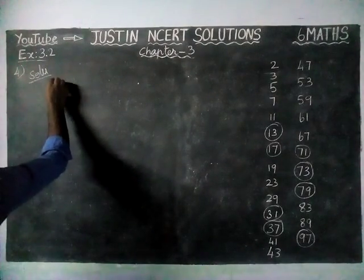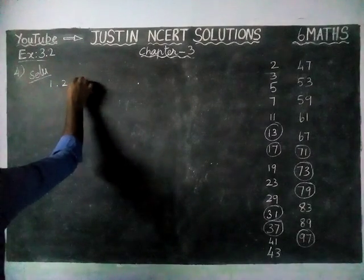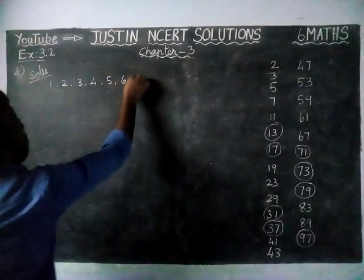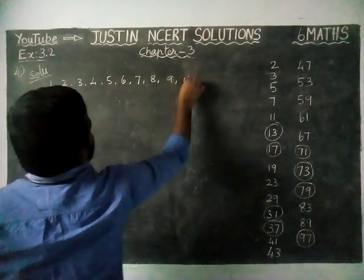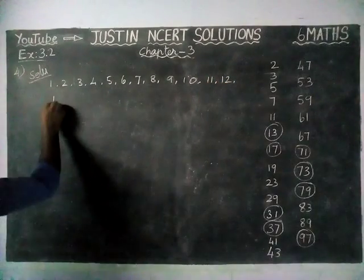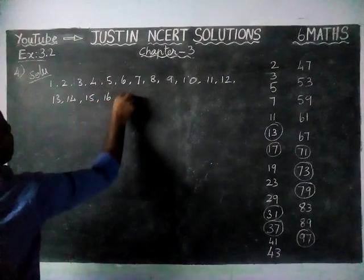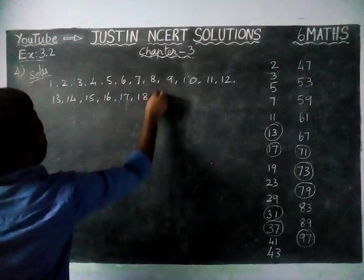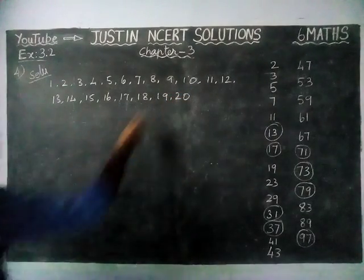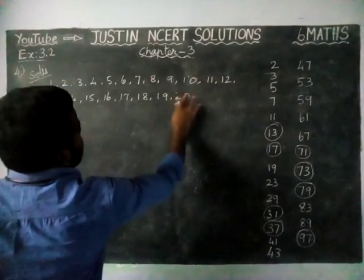So, we will write all the numbers from 1 to 20: 1, 2, 3, 4, 5, 6, 7, 8, 9, 10, 11, 12, 13, 14, 15, 16, 17, 18, 19, 20. But less than 20 only we have to write — we should not write 20. So, we will write up to 19.